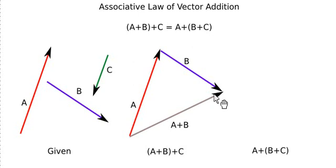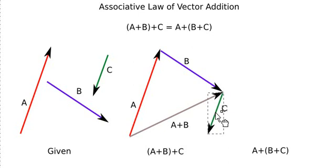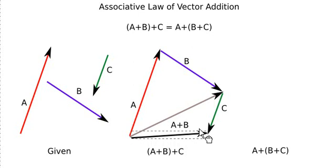Now I have to add vector c to this resultant, again by the triangle law. I place vector c such that the head of vector a plus b is at the tail of vector c. To find the resultant of the two vectors, that is a plus b plus c, I complete the triangle by joining the tail of vector a plus b with the head of vector c. When I join them, I obtain the resultant a plus b plus c. This is the left-hand side.